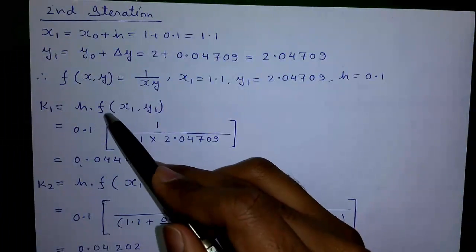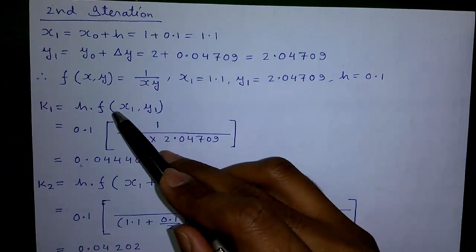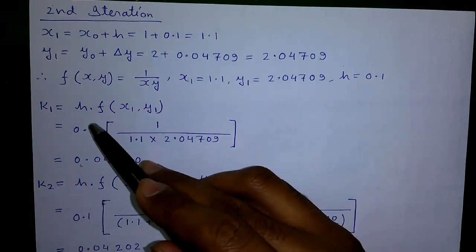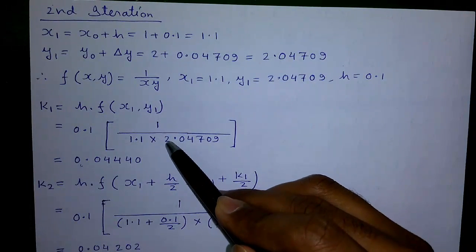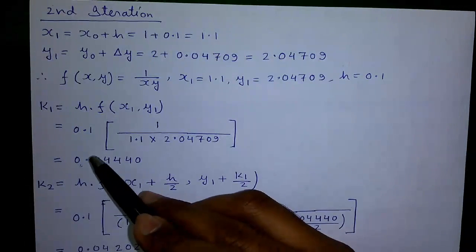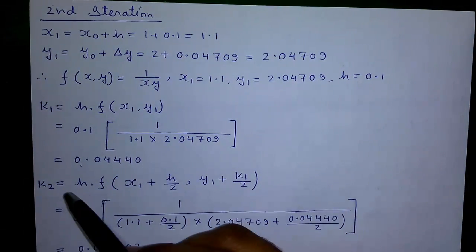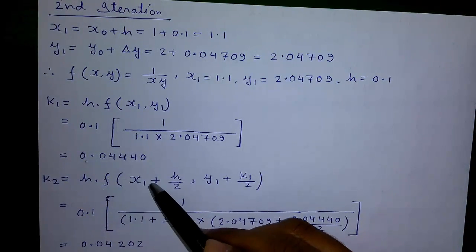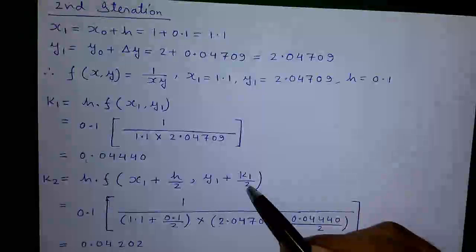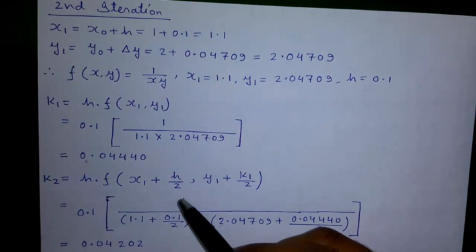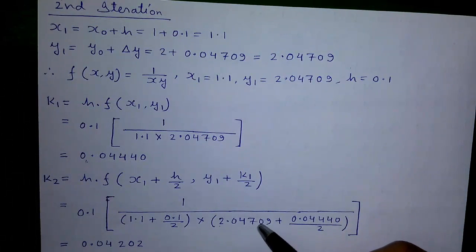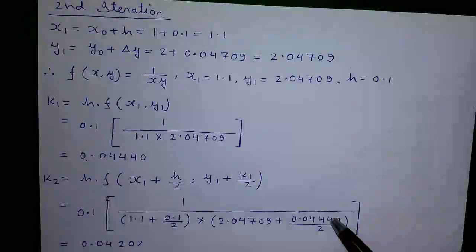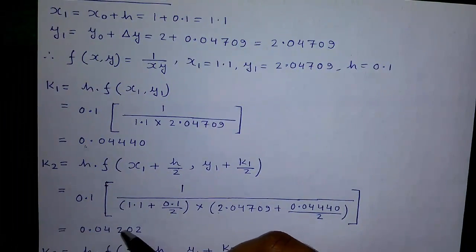So k1 equals h times f(x1, y1). The formula remains the same, only values change. That equals 0.1 times 1/(1.1 times 2.04709), so k1 equals 0.02440. Next, k2 equals h times f(x1 + h/2, y1 + k1/2) equals 0.1 times 1/((1.1 + 0.1/2)(2.04709 + 0.02440/2)), where 0.02440 is our k1. So k2 equals 0.04202.